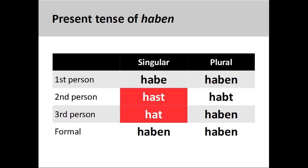The second principal part is important as it lets us know that the verb we are conjugating has unpredictable variations in the second and third person singular. This is a typical characteristic of most irregular and strong verbs.